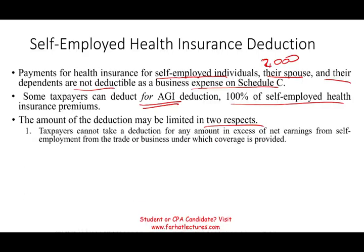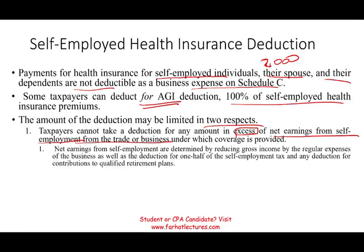The first restriction is that you are limited to your net earnings from self-employment. A taxpayer cannot take a deduction for any amount in excess of net earnings from self-employment from the business. Net earnings from self-employment equals gross income — that is, revenue reduced by regular expenses — minus one-half of self-employment tax, and minus any deduction for contributions to qualified retirement plans. Whatever is left is the maximum you can deduct.